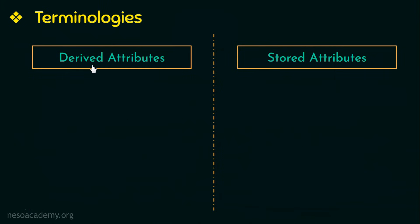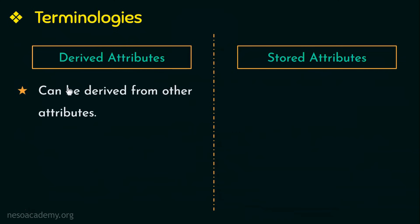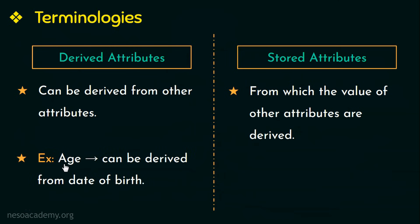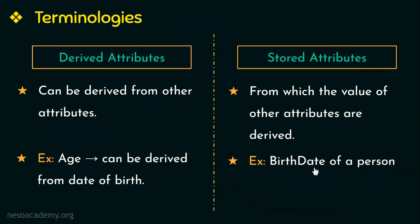Next, let us see what derived attributes and stored attributes are. Derived attributes are attributes that can be derived from other attributes, whereas stored attributes are attributes from which the value of other attributes are derived. An example of a derived attribute is age, since age can be derived from date of birth. Date of birth is therefore a stored attribute, because from this attribute we can derive the age of a person.